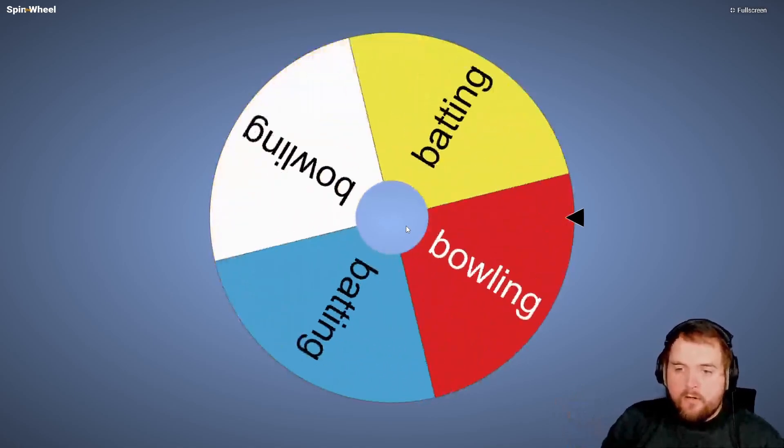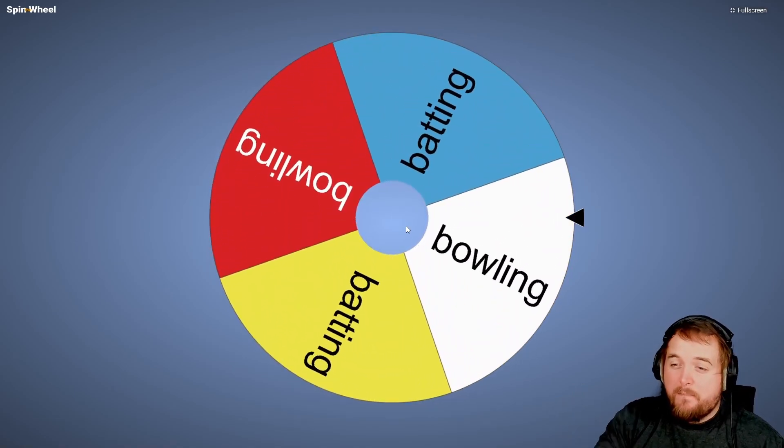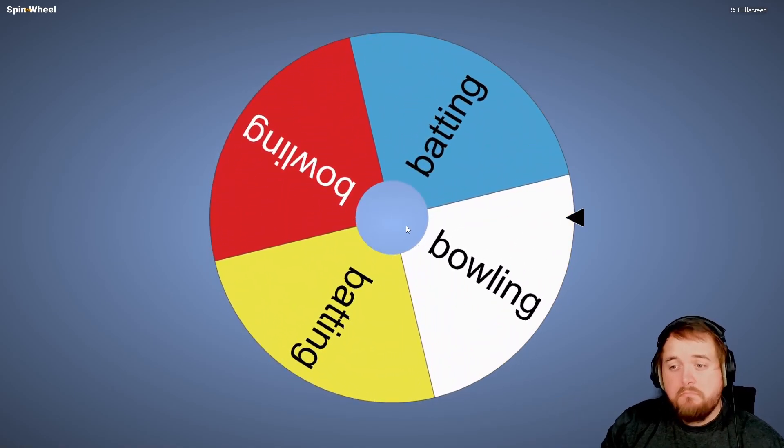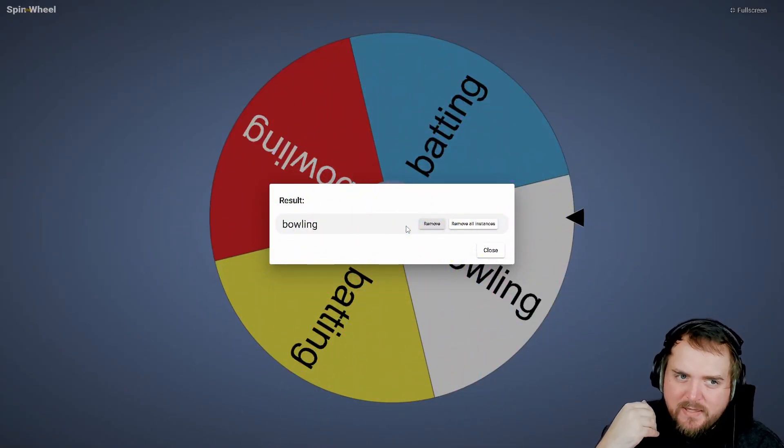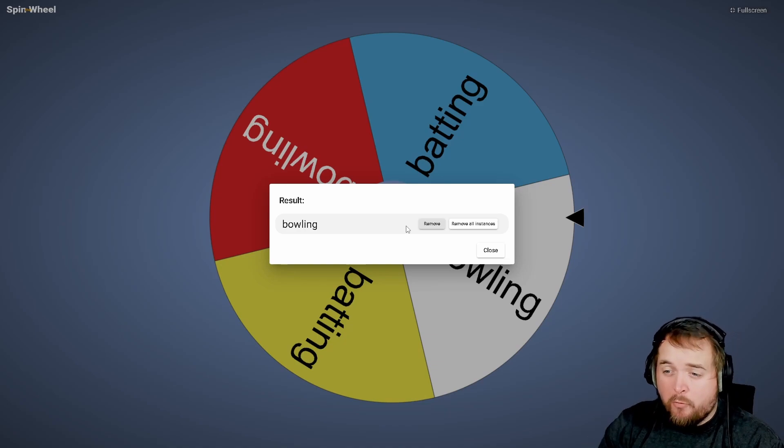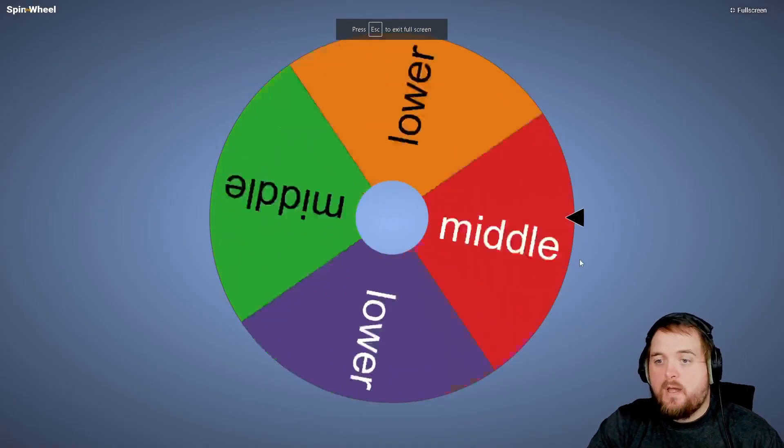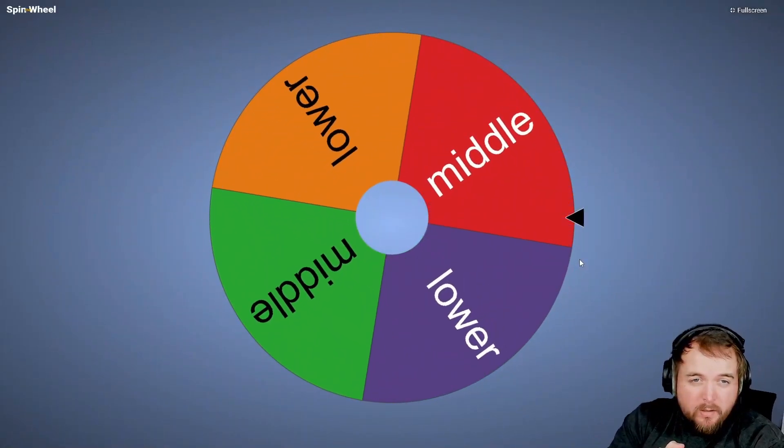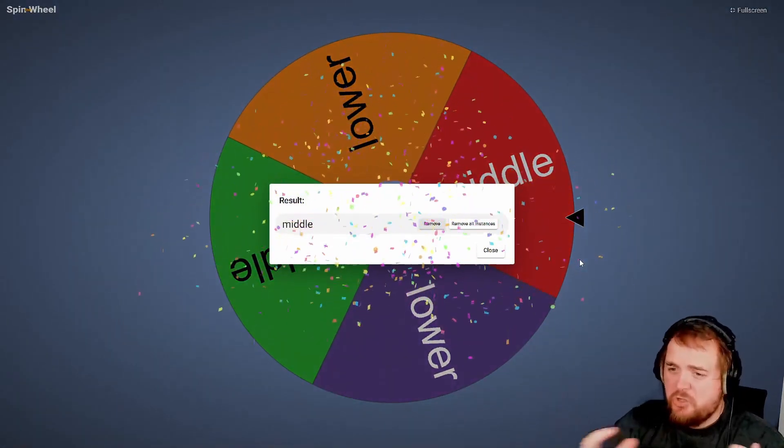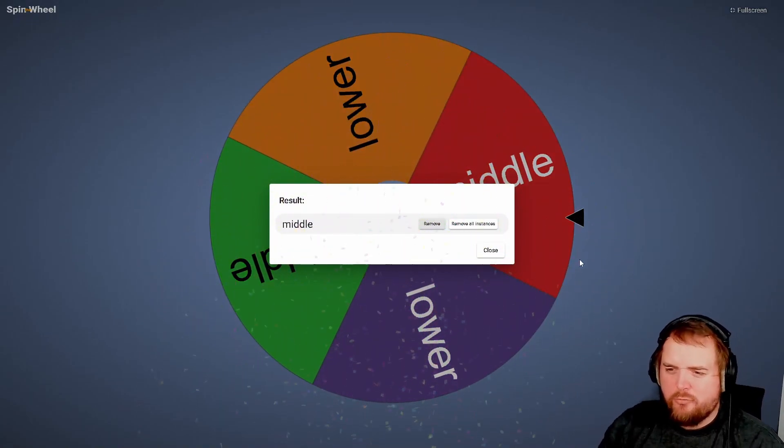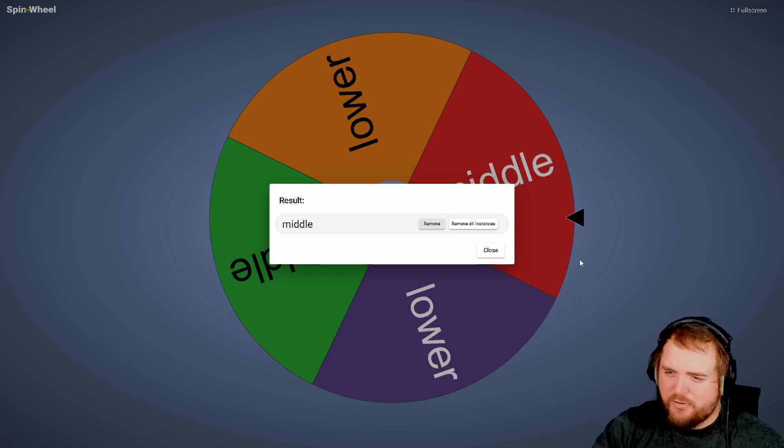Batting or bowling all-rounder, we are about to find out. We're gonna be a bowling all-rounder. That's fine. We now need to find out if we're gonna bat in the middle order or the lower order. Middle order bat all-rounder. It's looking good. We're looking like a Ben Stokes, a Cameron Green, a Flintoff, a Botham. I don't know why I've just put Cameron Green in there. I'm better than Cameron Green.